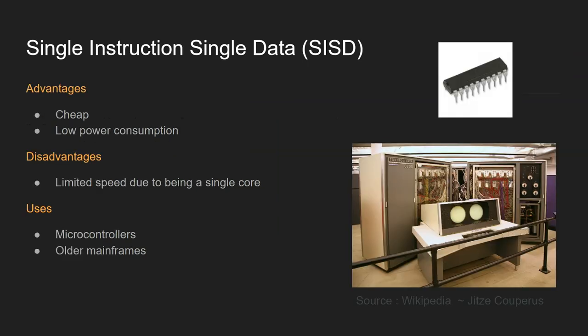What are the advantages and disadvantages? A single instruction, single data system is cheap — relatively simple to design and to manufacture, which is good. Also, because you've only got a single processor working, it's a lower power consumption model, great for systems where power is an issue, such as remote systems relying on battery or solar power. Of course, because they're only a single core system, they are limited in speed and you'll get bottlenecks around the processor. They're mainly used for microcontrollers and systems with limited functionality, and they also used to be used in older mainframes of the 60s and 70s.